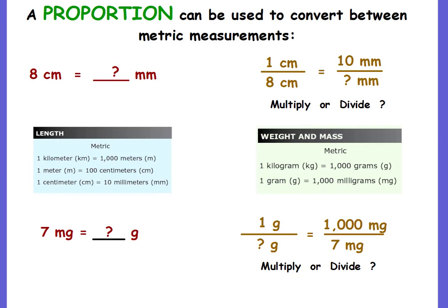Yes, you can use the reference chart and do it mathematically — just multiply or divide — but we're going to use proportions because next year in seventh grade you'll have to learn how to convert between metric and customary systems using proportions. So we're going to get you ready for the proportion method. Let's start with our first example: eight centimeters equals how many millimeters.